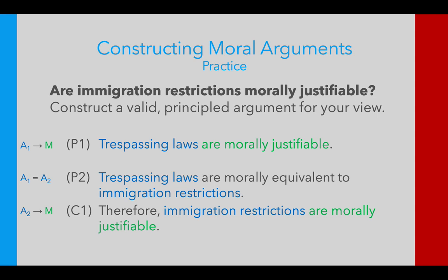This argument, put this way, can be a bit more persuasive and catch people off guard. You point out that trespassing laws — which everyone thinks are fine — and then reveal they're morally equivalent to immigration restrictions. Your opponent is caught off guard: they were on board with trespassing laws, and now the burden falls on them to identify the morally relevant difference between the two things. That's one way an analogical argument might go. Hopefully this is helpful, and we'll practice some of this in class. See you later!